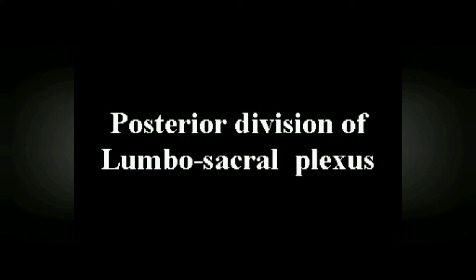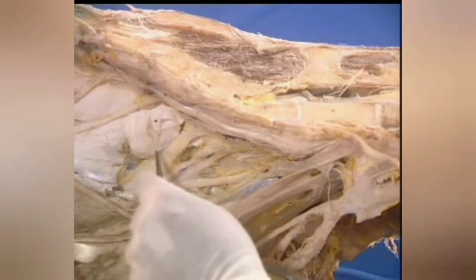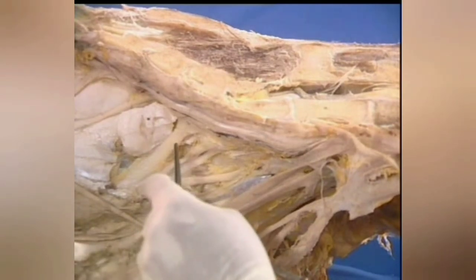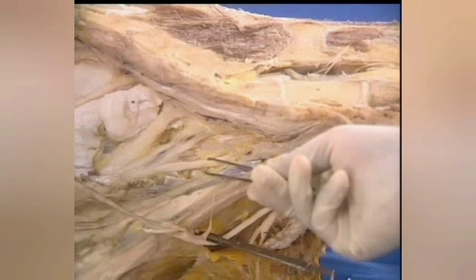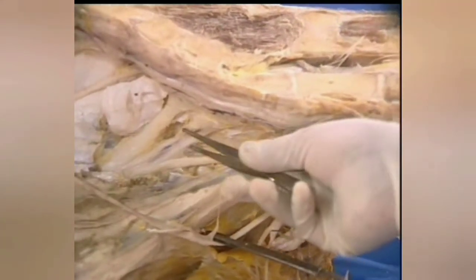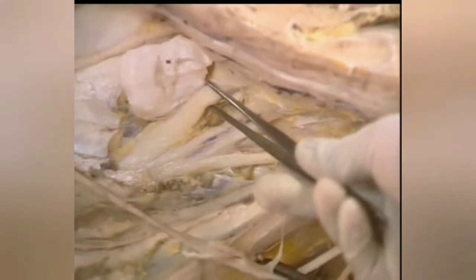Nerves arising from this plexus supply the entire musculature of the hind limb. At this stage, we can see the posterior division of the lumbosacral plexus, situated above the greater sciatic foramen. Note the ventral primary branches of the fourth, fifth and sixth lumbar spinal nerves, which are involved in the formation of the posterior division.